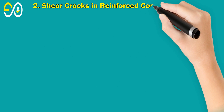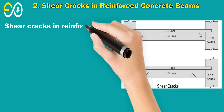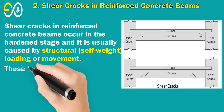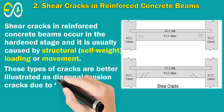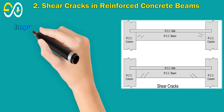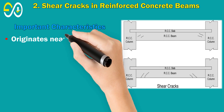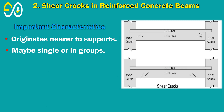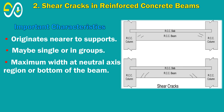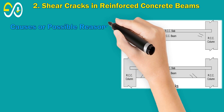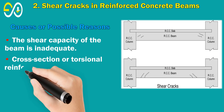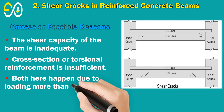2. Shear Cracks in Reinforced Concrete Beams. Shear cracks occur in the hardened stage and are usually caused by structural self-weight, loading, or movement. These cracks are better described as diagonal tension cracks due to the combined effects of flexural bending and shearing action. Important Characteristics: Originates nearer to supports; may be single or in groups; maximum width at the neutral axis region or bottom of the beam. Causes: The shear capacity of the beam is inadequate; cross-section or torsional reinforcement is insufficient; both occur due to loading more than the designed load.